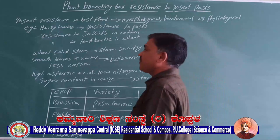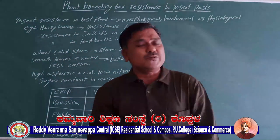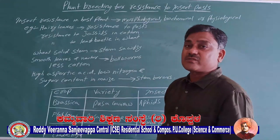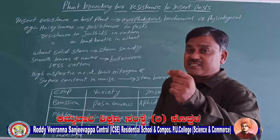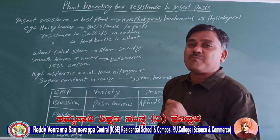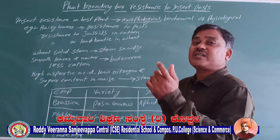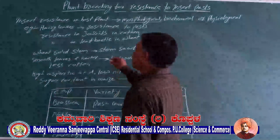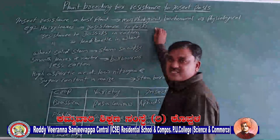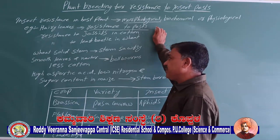For example, not all plants have hairy leaves. The presence of hairy leaves in a crop plant is a particular morphological character that makes that plant resistant to pests.